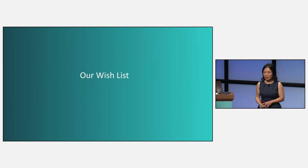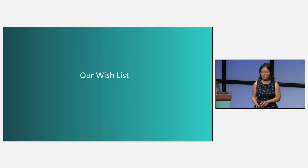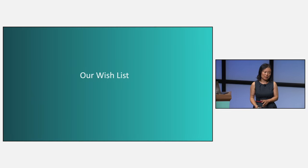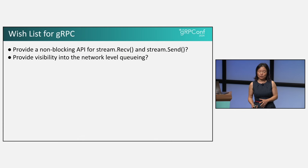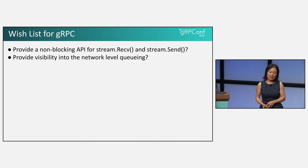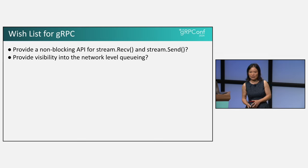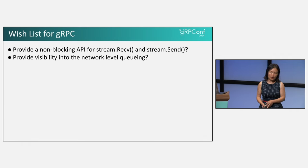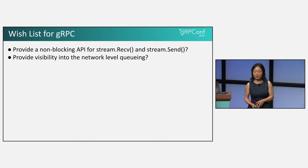This concludes the sharing of our enhancement work to improve trading system performance using gRPC. Next, we would like to present our wish list based on our experience with gRPC, protobuf, and flat buffers — intended not as criticism, but as constructive feedback from the field in hopes of enhancing these valuable libraries. Although we used three threads to work around the blocking nature of stream.Receive and stream.Send, we believe a set of non-blocking APIs could greatly help simplify our implementation and further enhance performance. Additionally, we think an API to provide visibility into network-level queueing would be invaluable in helping diagnose and optimize system behavior under load.